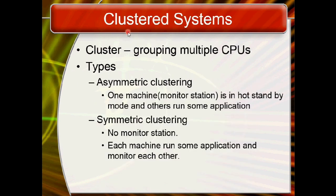The next kind of system is the clustered system, which involves grouping multiple CPUs. There are two types: asymmetric clustering, where one machine acts as a monitor station (like a head) controlling the remaining stations while other stations run applications, and symmetric clustering.